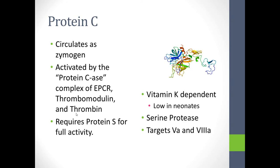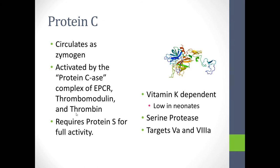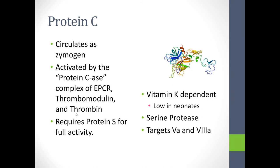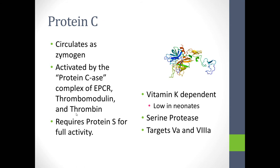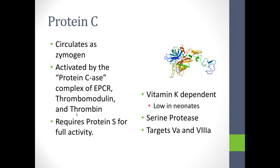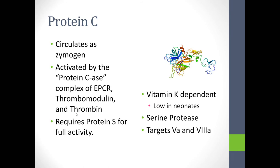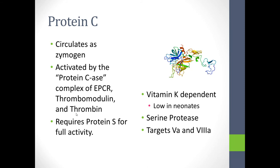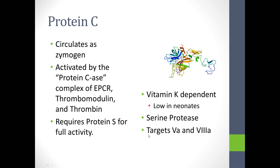Protein C circulates as a zymogen, or inactive enzyme. It's activated by the protein C-ACE complex. For full activity, it requires protein S as a cofactor. It is vitamin K dependent, and it's naturally low in neonates — protein C levels can be 10% to 20% and still be normal. Unless there's no protein C detected in an infant, one can't rule out normal neonatal liver production. It is a serine protease, and its primary targets are factor 5a and factor 8a.